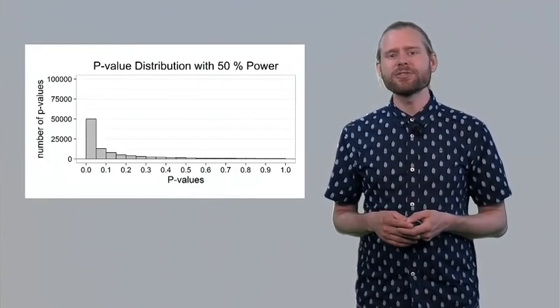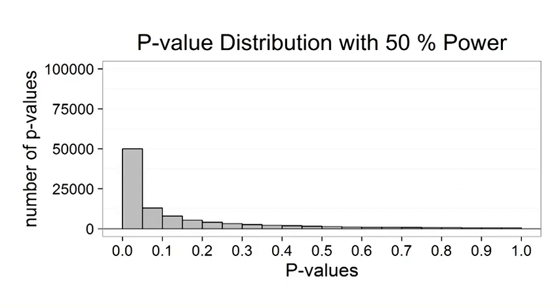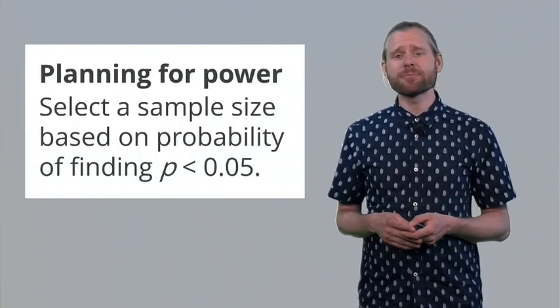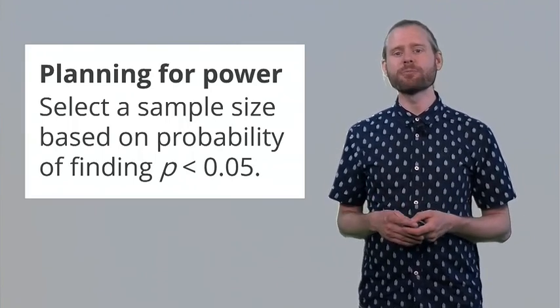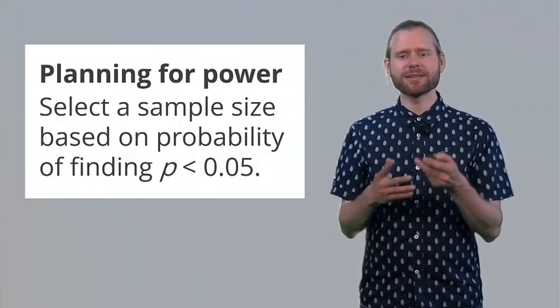A second approach is to design a study so that it will have a specific statistical power. We already saw this graph earlier on in the course, and in this simulation we have 50% power, which means that 50% of the p-values end up in the left-most bin. Now you might think this is too low. You want to design a study which has much higher power. For example, 95% power. So you can design a study where you plan for power. You select a sample size based on the probability of observing a p-value smaller than 0.05. And in these cases you would do a priori power analysis based on an expected effect size.